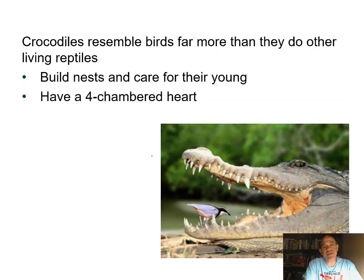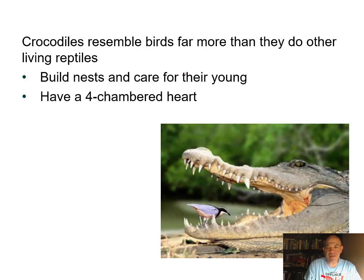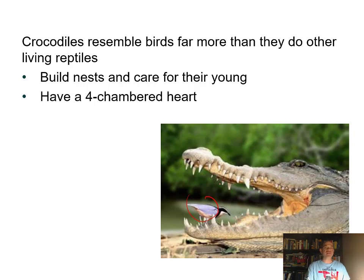Behaviorally, crocodilians resemble birds more than other reptiles—they build nests, guard them, and brood their young with parental care, just like birds. They have a four-chambered heart just like birds. There is even a bird that picks food and parasites from inside a crocodile's mouth, and the crocodile allows it—a symbiotic relationship.